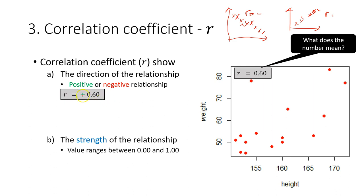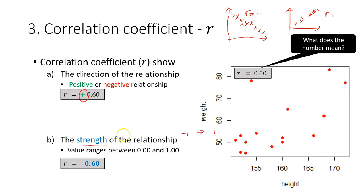In this case, the relationship between body height and body weight is positive, meaning that the taller the student, the heavier the student. The r value also shows the strength of the relationship. The value ranges between 0 and 1, so the full range is from negative 1 to positive 1. Here the strength is 0.6. The maximum possible strength is 1 and the minimum is 0, while the direction is shown by the sign in front of the value.